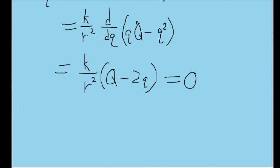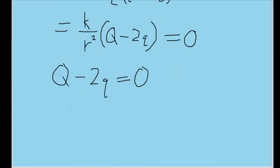So to make this even simpler, let's just ignore the k over r squared entirely, and set big Q minus 2q equal to 0 on its own.